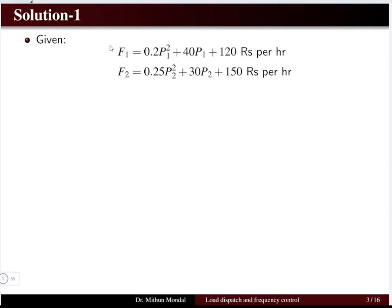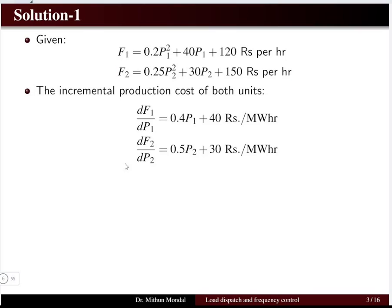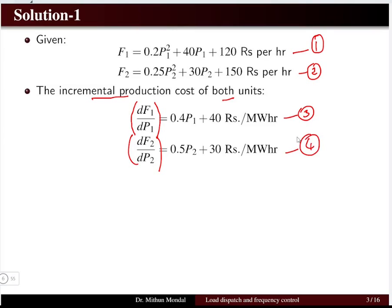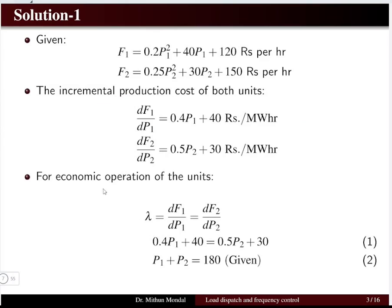For the solution, we use the given fuel input equations. First, we determine the incremental production cost of both units, given by the differential of the fuel input with respect to its own power — dF1/dP1 and dF2/dP2. Differentiating gives us the incremental cost equations. The condition for economic operation is that the incremental production costs of both plants must be equal, so we equate equation 3 and equation 4.